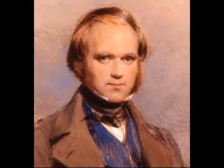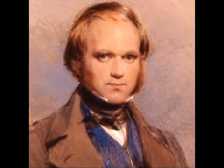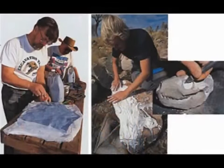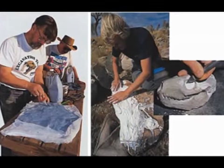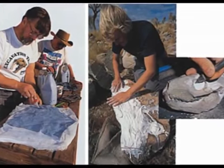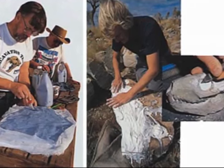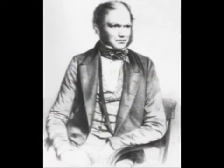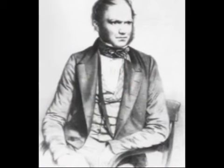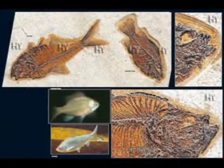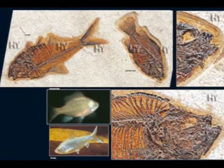Darwin had supposed that such transitional forms would be discovered when the fossil record was inspected more carefully. Subsequently, evolutionists that followed him examined geological layers all around the world for 140 years and looked for these missing fossils. All these efforts ended with great despair. The transitional forms imagined by Darwin remained just that — figments of imagination.